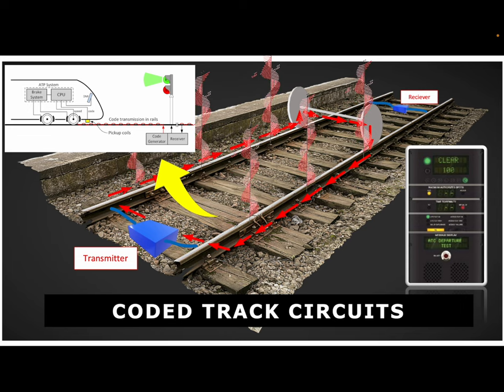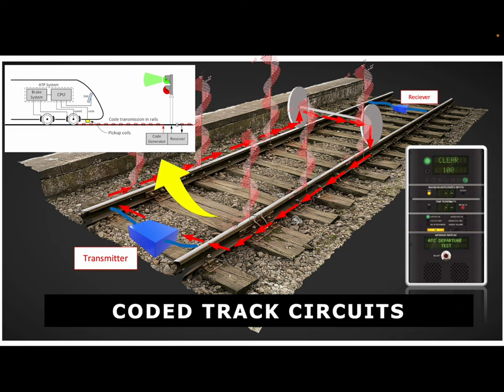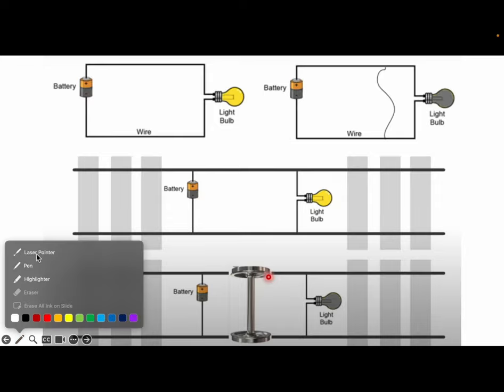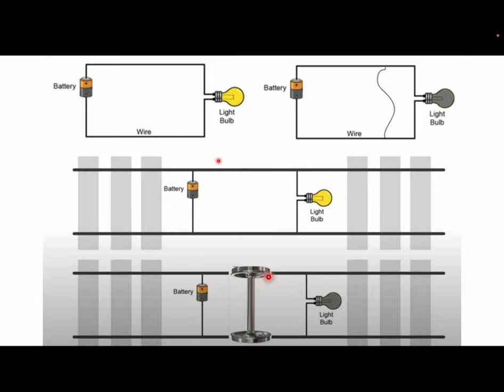Hello everyone, welcome to this video where we will discuss coded track circuits. If you remember, I made a video on DC track circuits and I will put the link in the description below. Fundamentally speaking, DC track circuits work by having a battery connected to a light bulb — it lights up the light bulb, but if you were to short the circuit then the light bulb would be off.